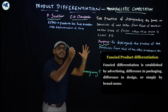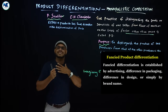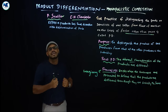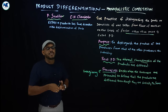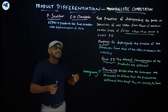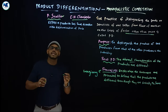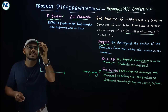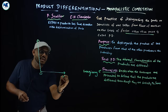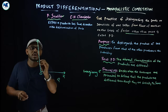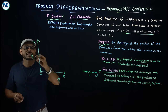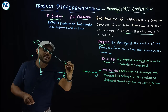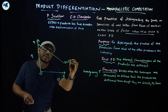In imaginary differentiation, products are actually the same, but customers are persuaded through branding and promotion to believe otherwise. That is what product promotion is about. In monopolistic competition, because of product differentiation, the demand curve is downward sloping. On the Y-axis we have price, and the demand curve slopes downward from left to right.